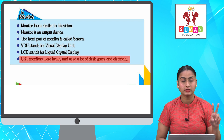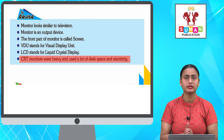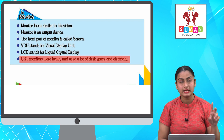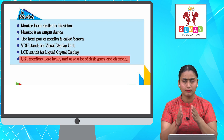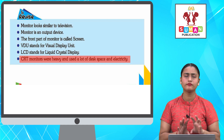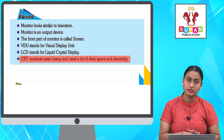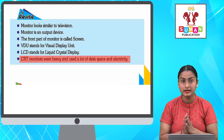Monitor jo hota hai computer ka ek part hota hai, bilkul television ki tarah dikhta hai. CRT — Cathode Ray Tube — jinke piche bulge hota tha, aaj kal use hote ve nahi dikhai denge. LCD — Liquid Crystal Display — kum electricity kheechte hain, lightweight hote hain, bhoat slim hote hain, desk pe jaga bhi kum kheerte hain. Touch screen mein visible keyboard ya mouse ki zaroorat nahi hoti; aapne fingers se koi bhi command de sakte hain aur yeh bhoat kum electricity use karte hain. So students, with this we come to the end of this chapter.